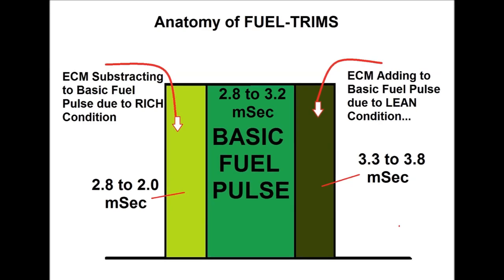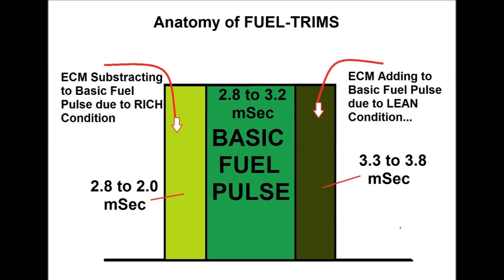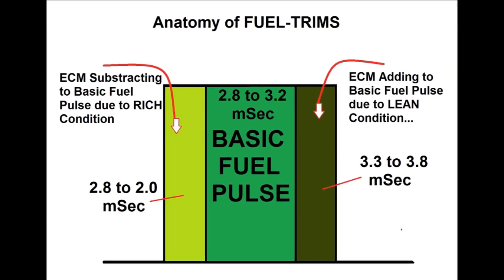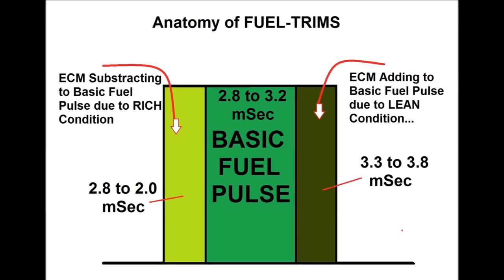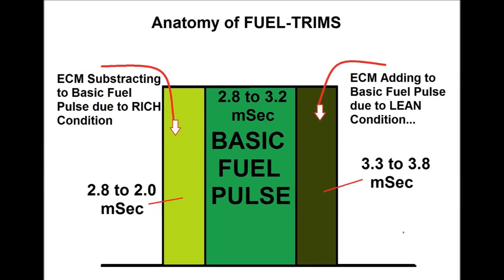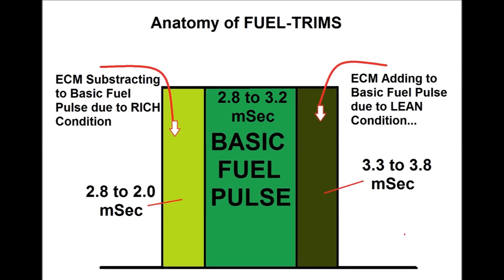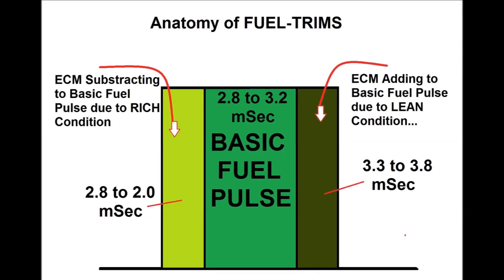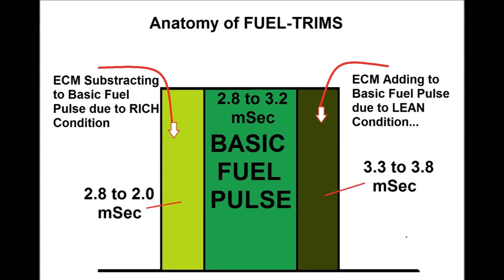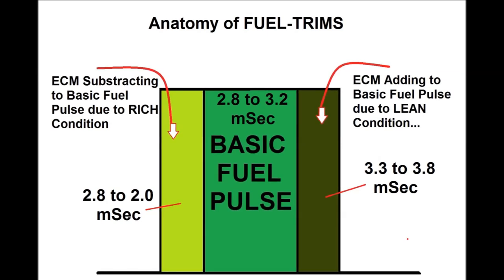The basic fuel pulse typically fluctuates between 2.8 and 3.2 milliseconds, and this range represents the beginning and end of the center green square. In newer engines with direct fuel injection, this is a little different, especially with piezo injectors that go into micropulses. But the basic concept is what you need to understand here.